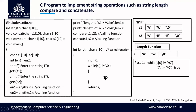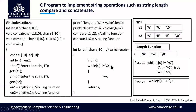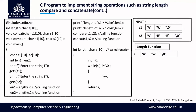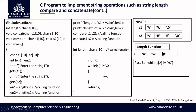i becomes 1. We loop back and check s[1]='w' — 'w' is not equal to null, so we increment i again; i becomes 2. In the next pass s[2]=null, so null != null is false — we exit the while loop. We return the current i value, which is 2. This 2 is written back to the calling function and assigned to len1, so len1 = 2.